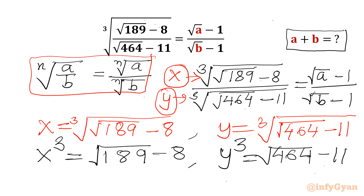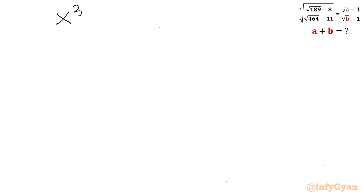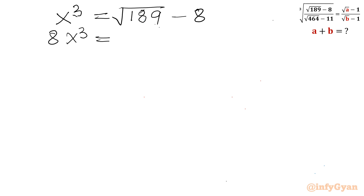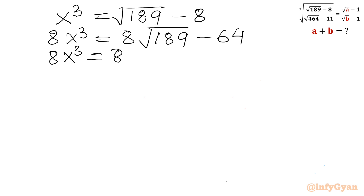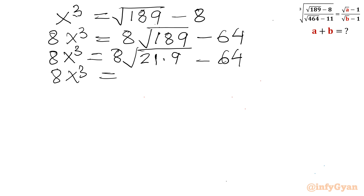So x cubed will be square root 189 minus 8, and y cubed will be square root 464 minus 11. Now I will use one trick — Simon's Favorite Factoring Trick (SFFT). I need to multiply both sides by 8. So I can write 8x³ equals 8 times square root 189 minus 64. I can factor 189 as 21 times 9, so this becomes 24 root 21 minus 64.